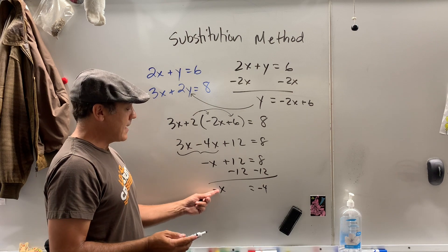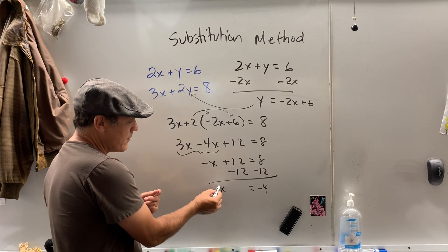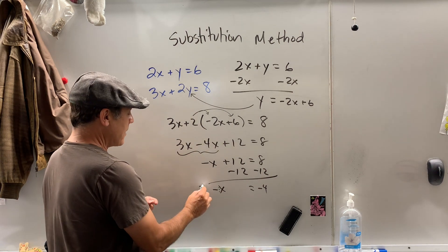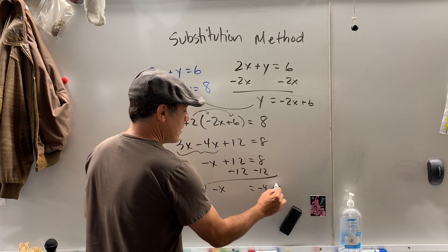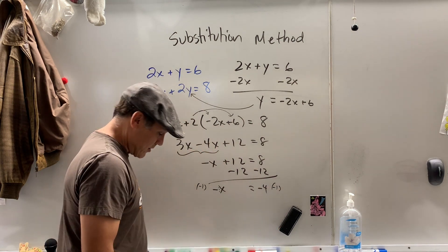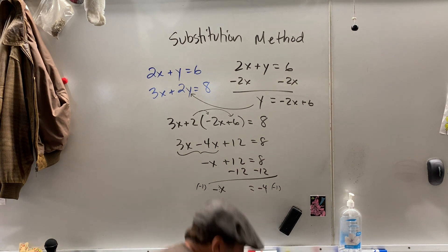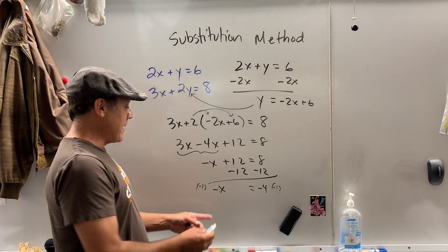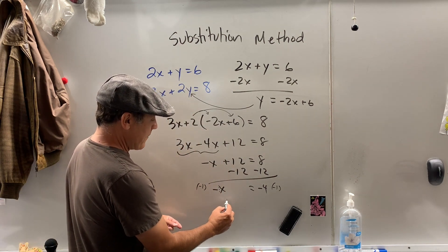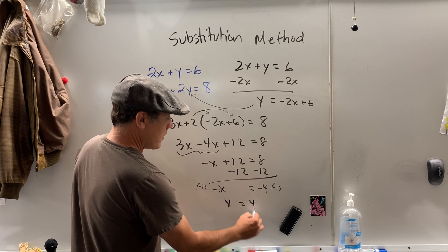And again, how do we get rid of this negative x? This negative, see, it's really an invisible negative 1. I like multiplying by negative 1. You could divide by negative 1. It makes no difference to me. Whoa. Oh, the bell threw me off. Anyhow, negative 1 times negative x is x equals 4.